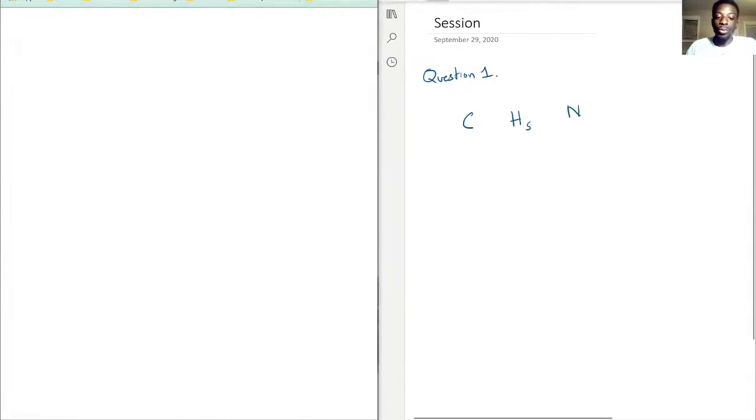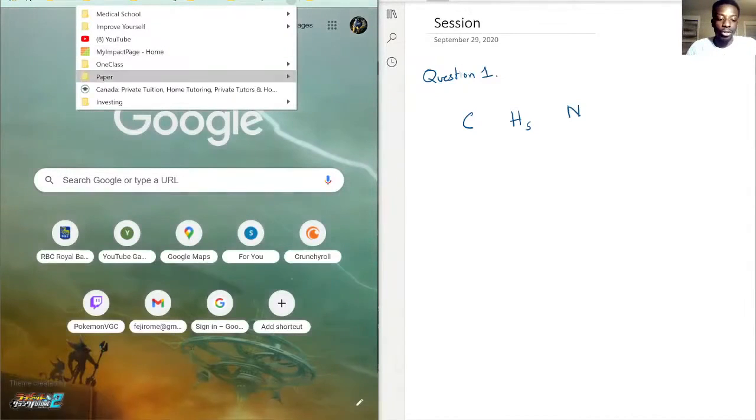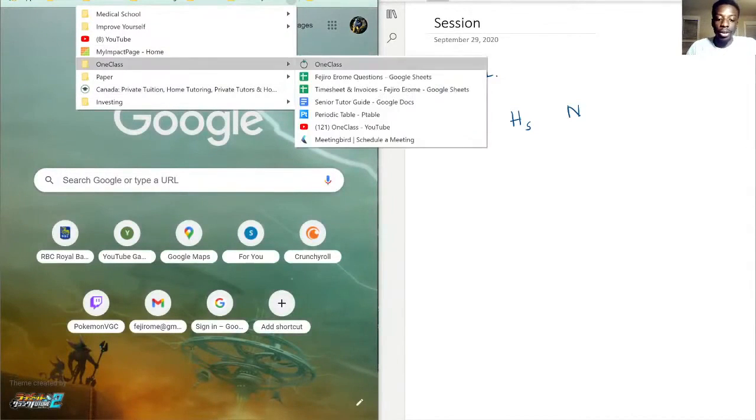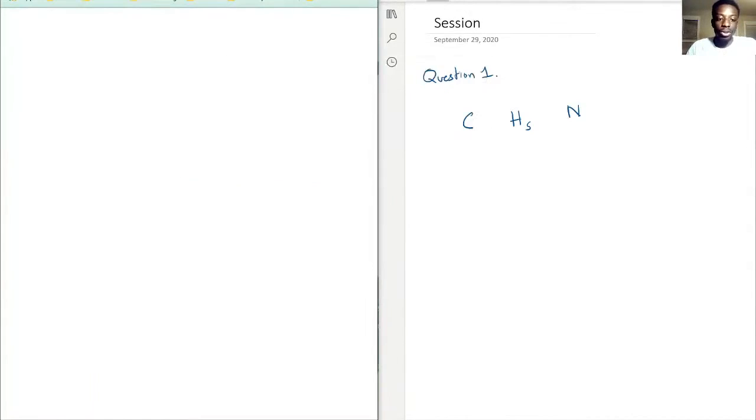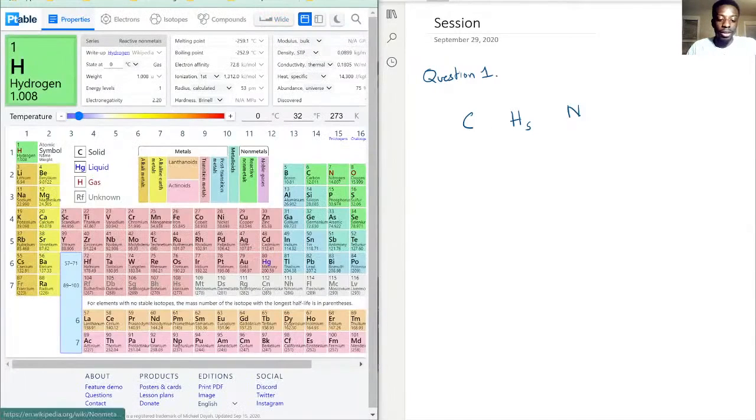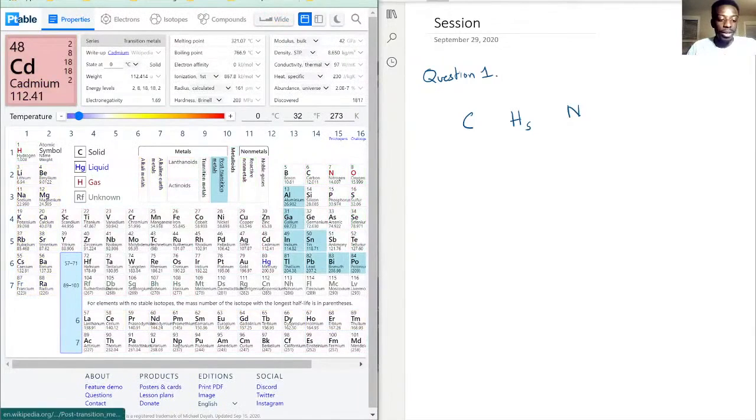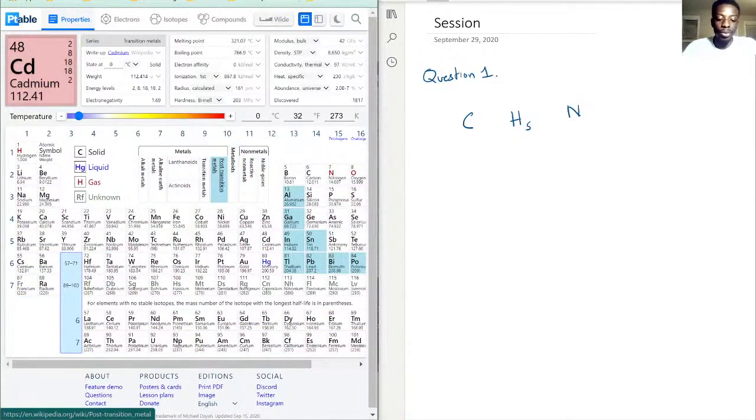So we definitely need help from our trusty periodic table. So right there, we have it ready. And so we have carbon, and carbon has four valence electrons. So we're just going to list it down here. Hydrogen has a valence electron each. So we put it as one, but because there's five of them, that's five electrons. Nitrogen also has five electrons.